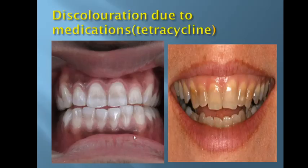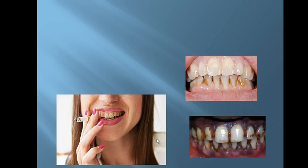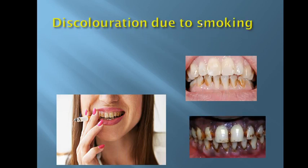This is how discoloration due to tetracycline looks — it is really very common. Patients with smoking habits can also have significant stains on their teeth, as you can see here. These stains can be removed with an ultrasonic scaler.